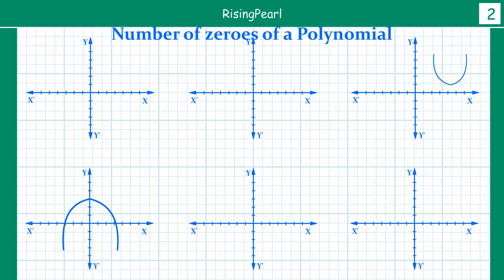Now, what I have done is draw some graphs and I am going to ask: can you tell how many zeros that polynomial has? I have six graphs here. Let me draw the first one — something like this. How many zeros do you think this has? Well, this has only one zero.